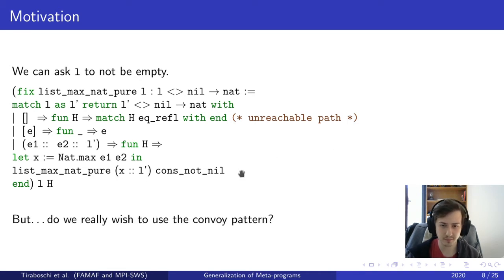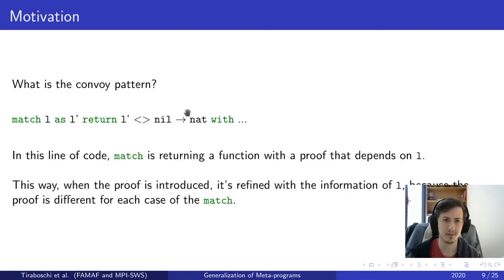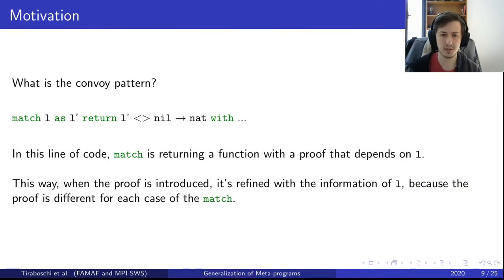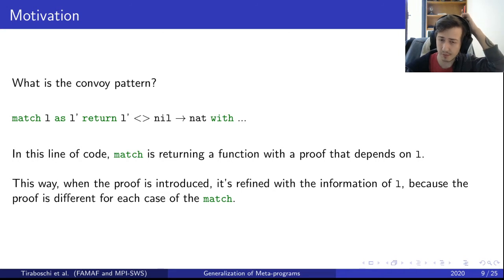We're actually using something called the convoy pattern by doing this return type. When we return a function with a proof, that proof depends on L. This way, when the proof is introduced, it's refined with the information of L because the proof is different for each case of the match — for each branch we get a different proof.